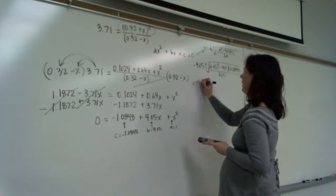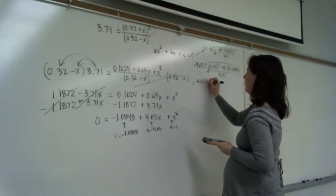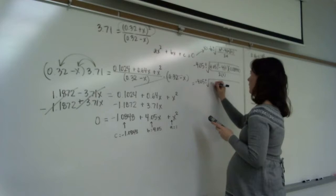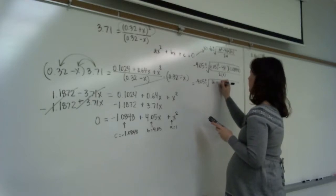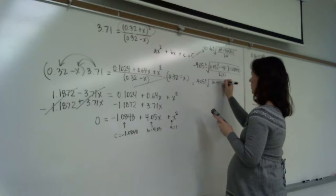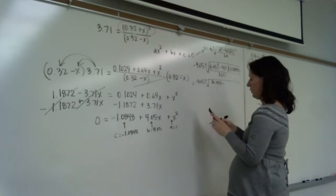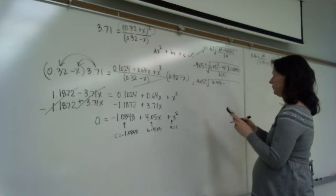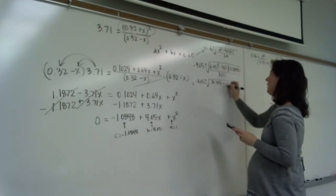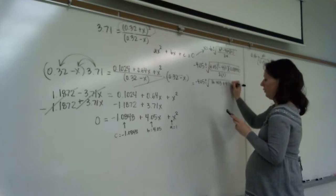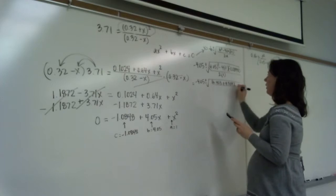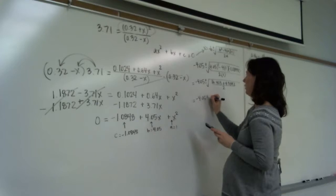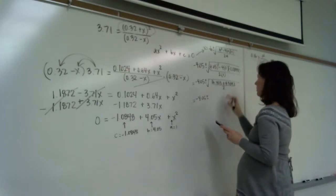So that's negative 4.05 plus or minus the square root of 16.4025 minus 4 times negative 1.0848. Since we have minus times a negative, we add: 4.3392. So under the radical we have 16.403 + 4.3392, all over 2.